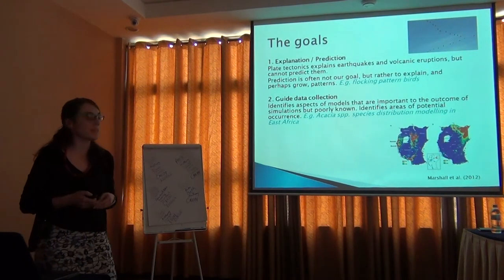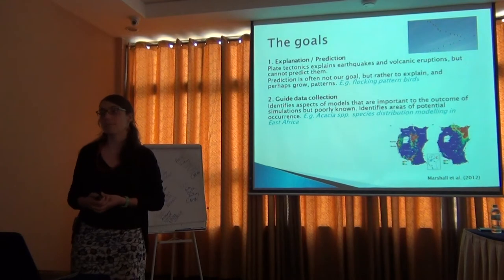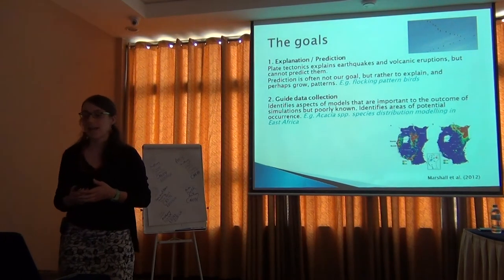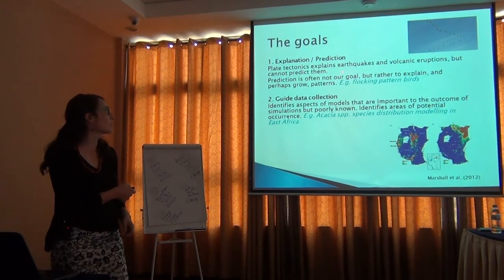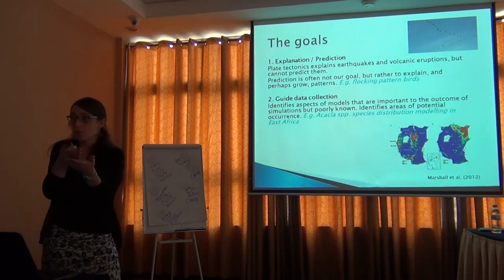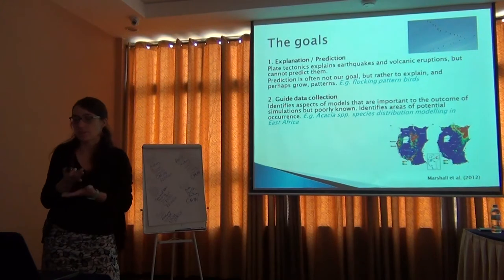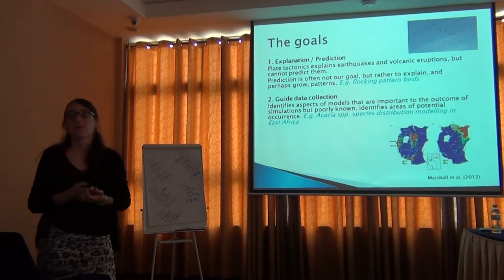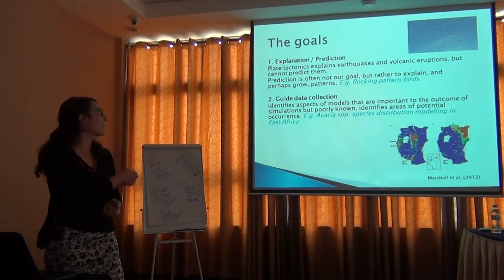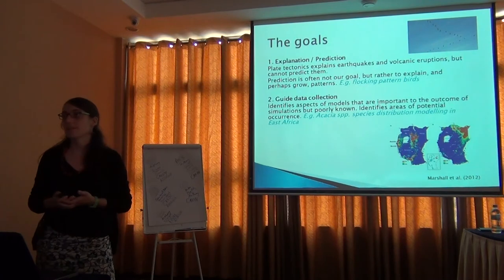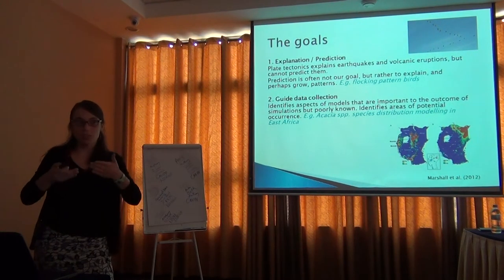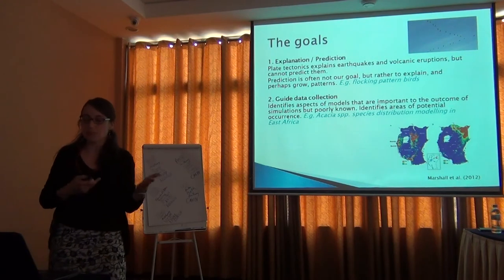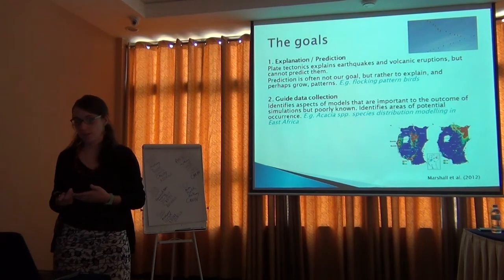The first distinction is between explanation of a process and prediction. I really like this sentence: plate tectonics explains earthquakes and volcanic eruptions — most happen at the edges of tectonic plates — but cannot really predict when the next will happen. It helps explain where and why they happen, but understanding the process is different from predicting what may happen in the future.